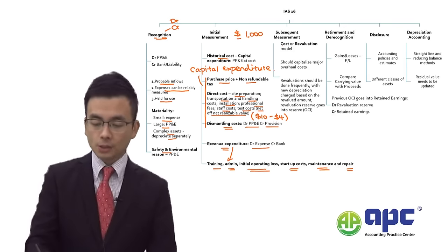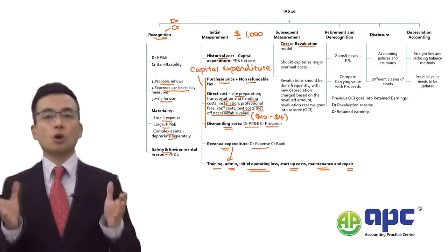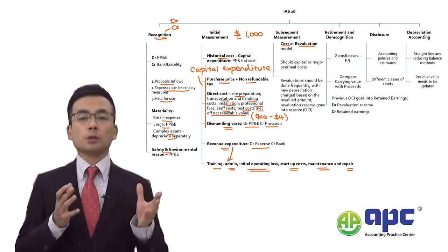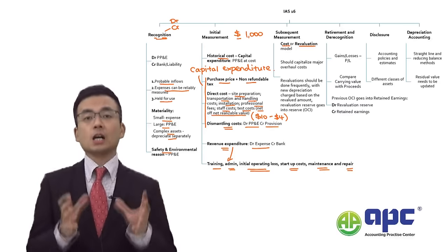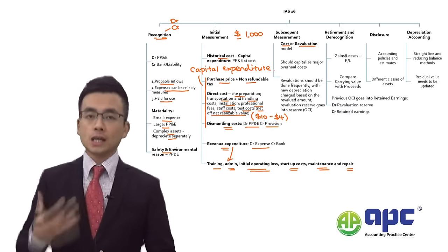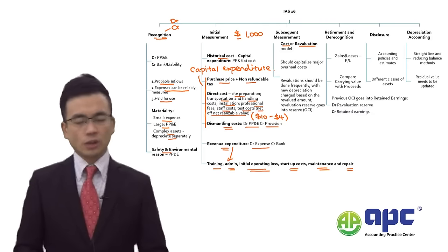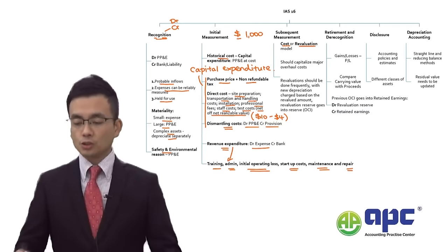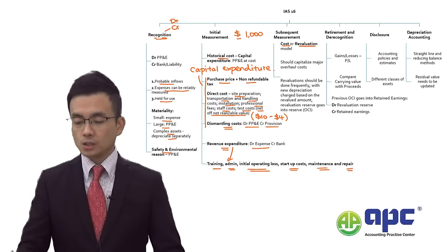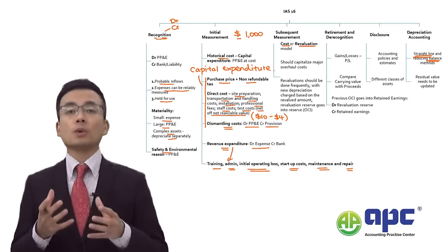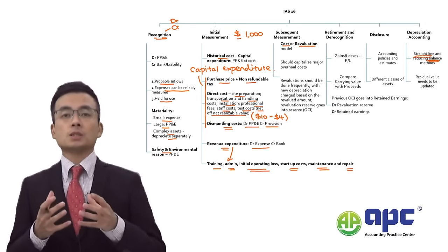For subsequent measurement, we have an accounting policy choice. Either we choose the cost model — carrying the PP&E at $1,000 cost minus accumulated depreciation, using either the straight-line method or reducing balance method — or we use the revaluation model.